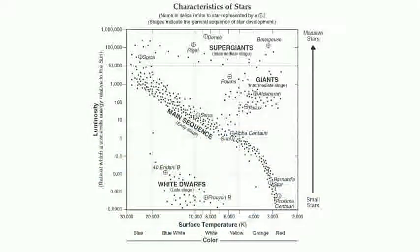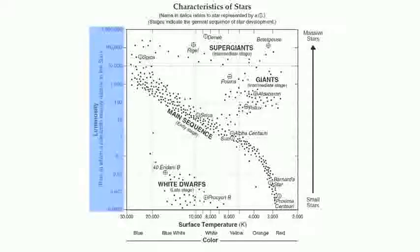This chart organizes our stars based on a couple of different factors. One of the factors is going to be luminosity — how bright a star is, or how much light a star is going to give off. That's going to be along our vertical axis.